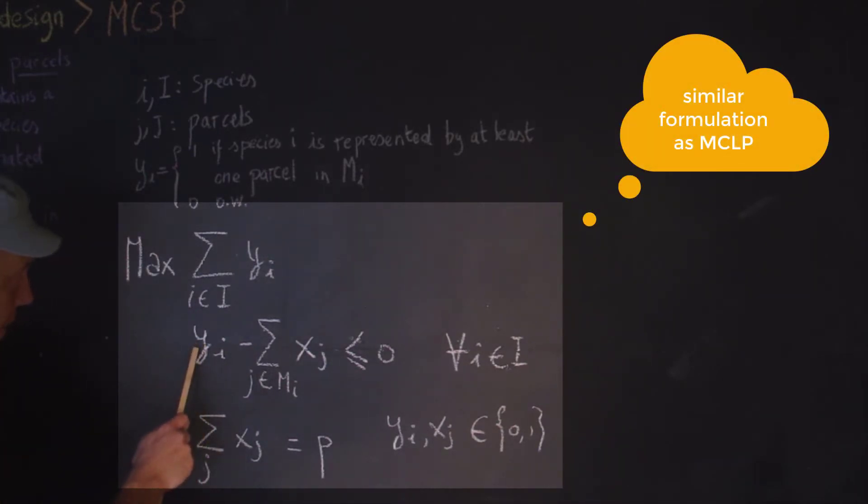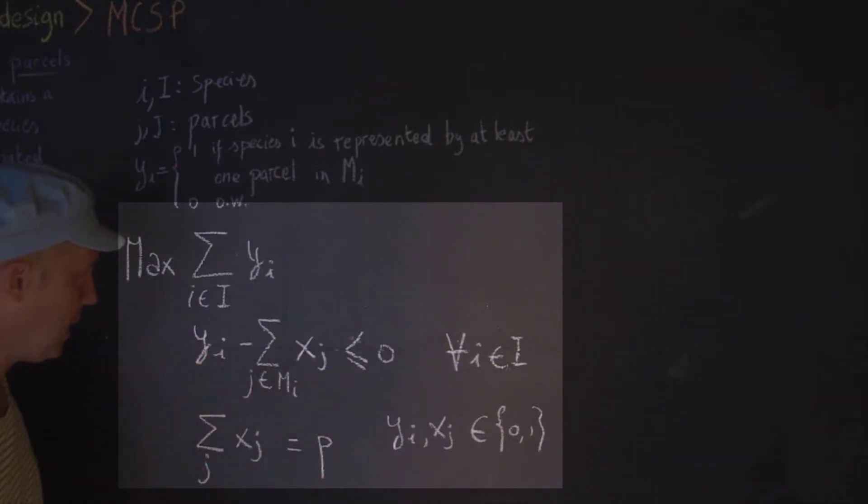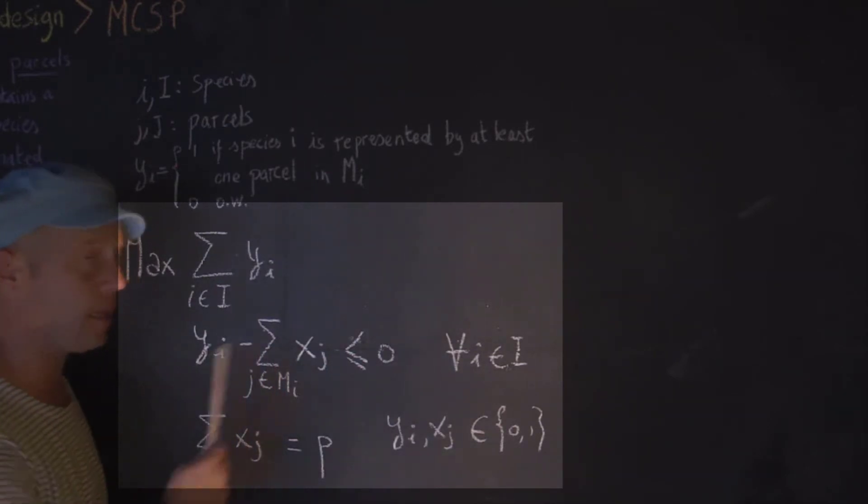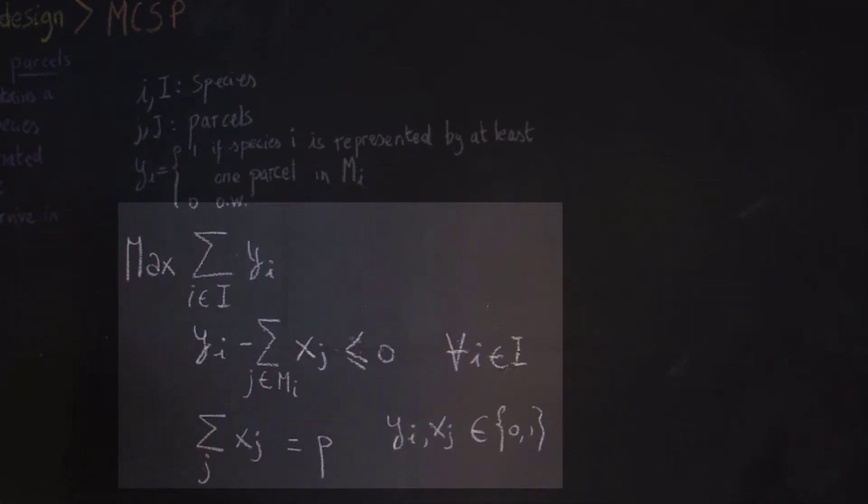The first constraint that we have is that if a species is represented in the system or is basically represented or preserved, there should be at least one or actually more parcels open that can actually harbor that particular species. And then here, so the sum X J, but J here belongs to M sub I. Then we say that the number of parcels that can be set aside is equal to P, and then we of course add the integer constraints that are 0 and 1. Now there's one thing that I'd like to point your attention to is this one here, right?